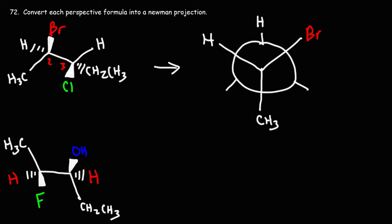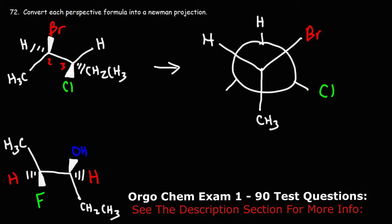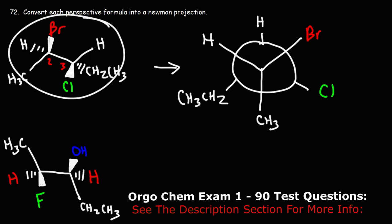The chlorine atom is on the wedge, coming out of the page, so we're going to put that on the right side — same with the bromine atom. The ethyl group is on a dash; it's going into the page, so it's going to be on the same side as hydrogen, that is on the left side, but attached to carbon 3. So that is the Newman projection equivalent to this perspective formula.